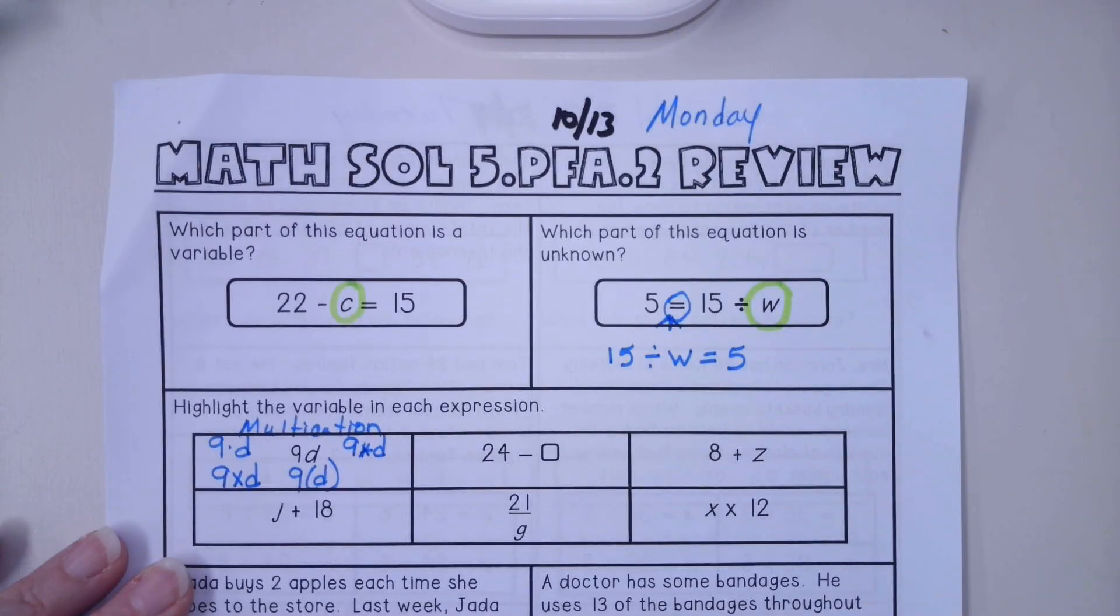The next one I think that's kind of questionable is this one right here. Think about what 21 over g is - is that addition, subtraction, multiplication, or division? 21 over g is a division problem that's saying 21 divided by g. And your variable is the g.